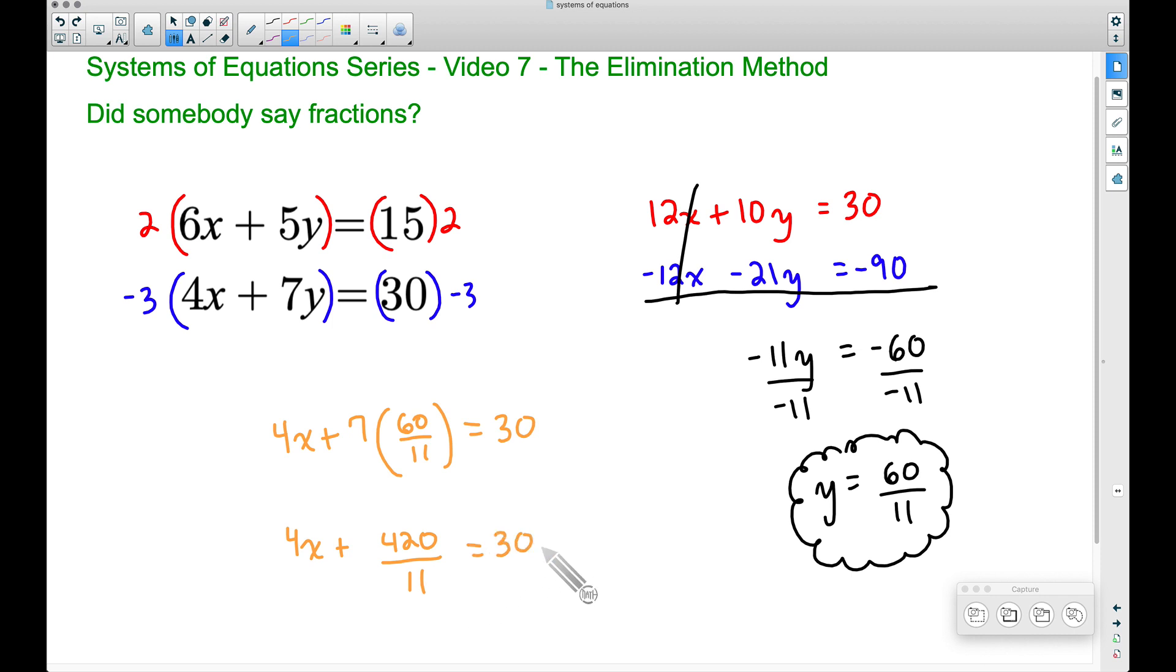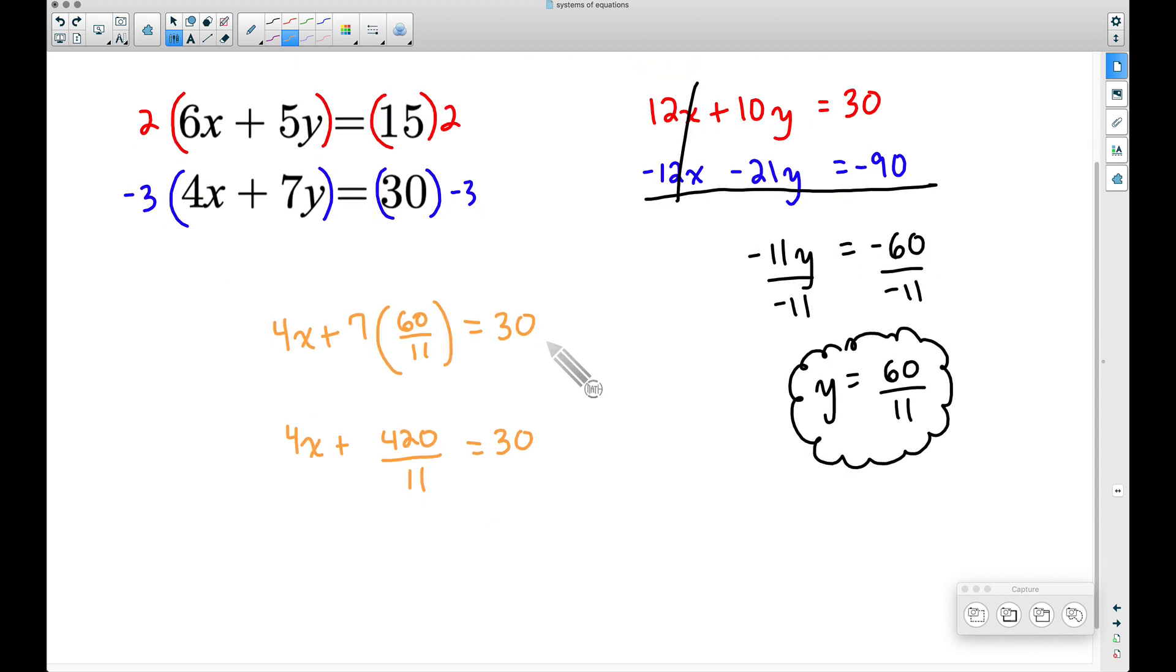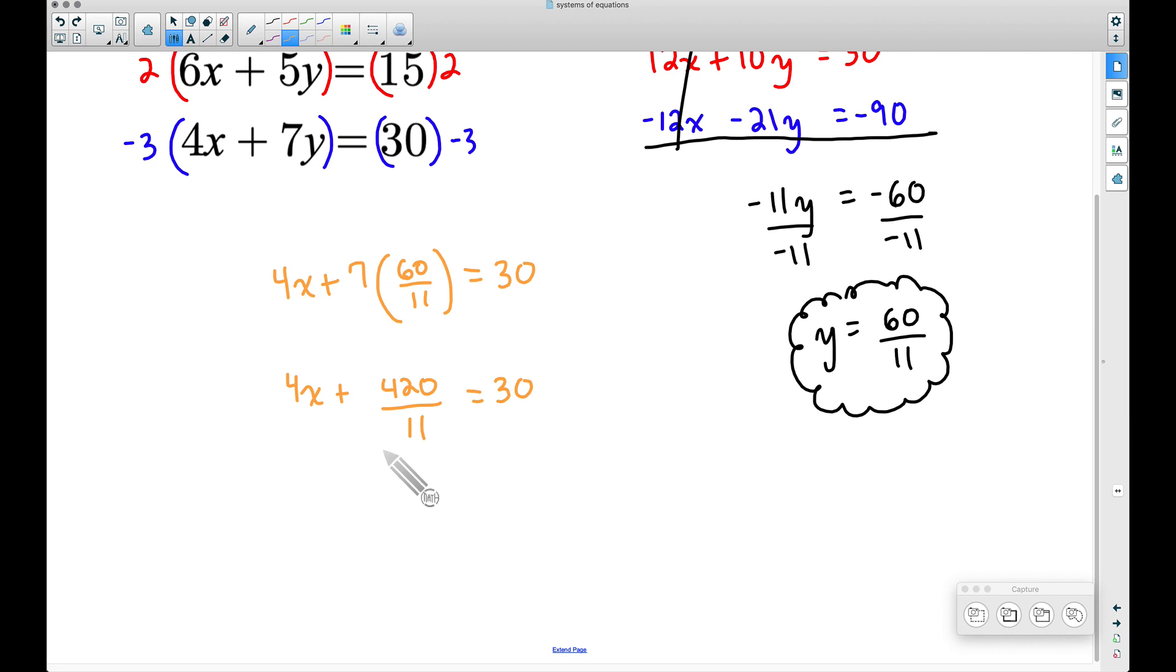If you've watched other videos I've done on solving basic equations, if we have fractions in those equations we can multiply both sides by a common denominator to get rid of the fraction. And since the only denominator we have is 11, let's multiply both sides by 11. This is going to help us get rid of that fraction, that 11 down there. Totally optional here, but this is how I prefer to solve them.